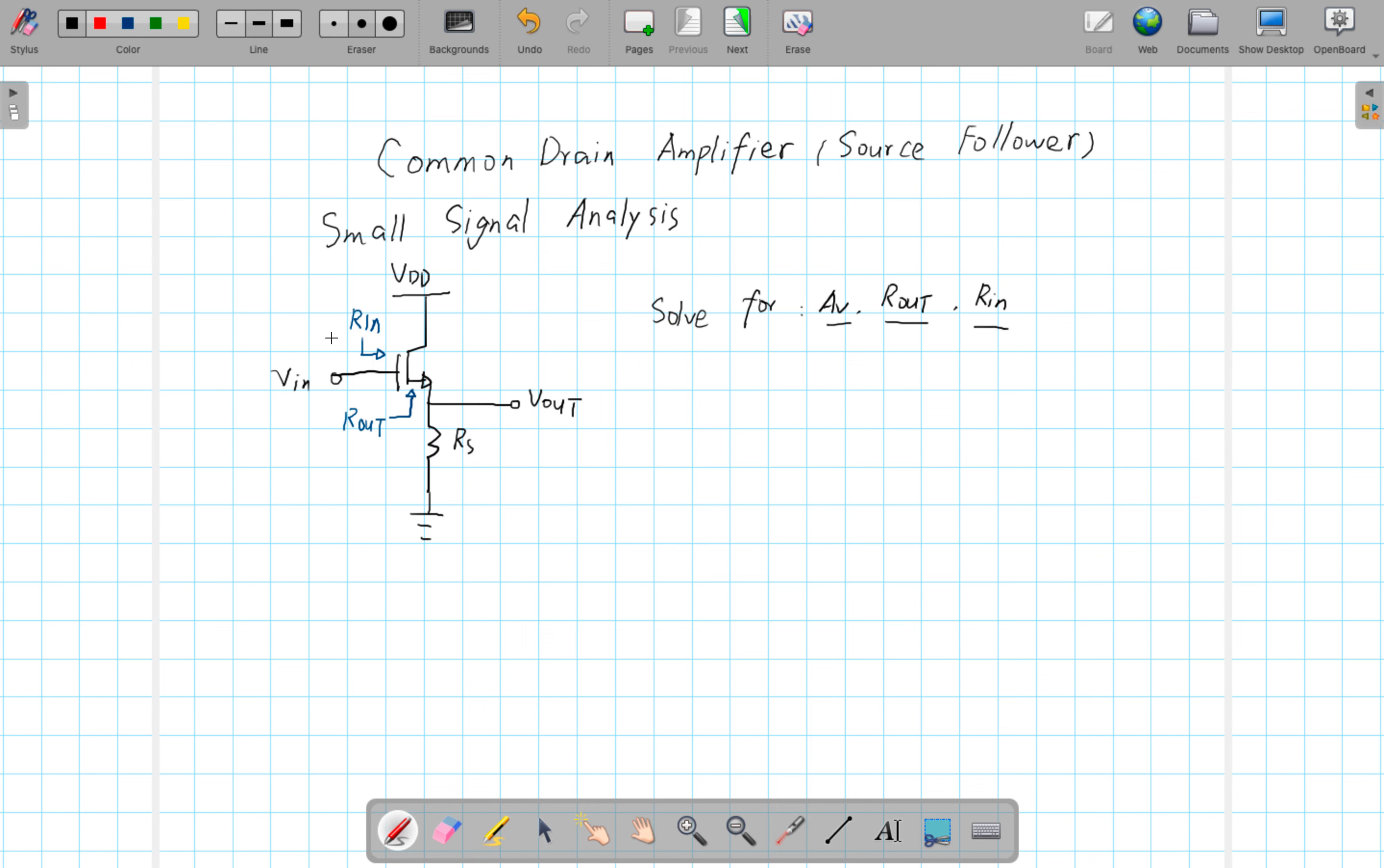So this is a common drain configuration. As you can see, the input is connected to the gate, the output connected to the source, and because the drain is common to the input and the output, we name it common drain.